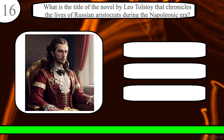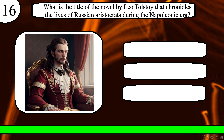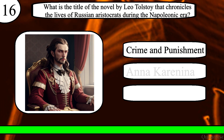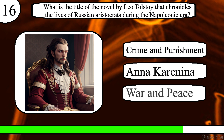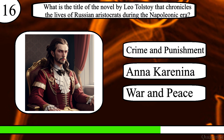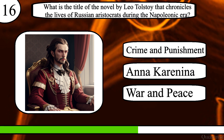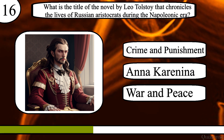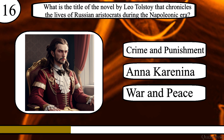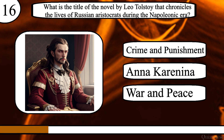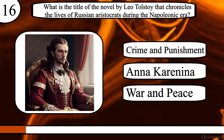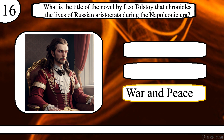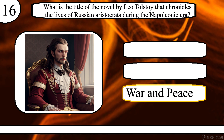Question 16. What is the title of the novel by Leo Tolstoy that chronicles the lives of Russian aristocrats during the Napoleonic era? Crime and Punishment, Anna Karenina, or War and Peace? The correct answer is War and Peace.